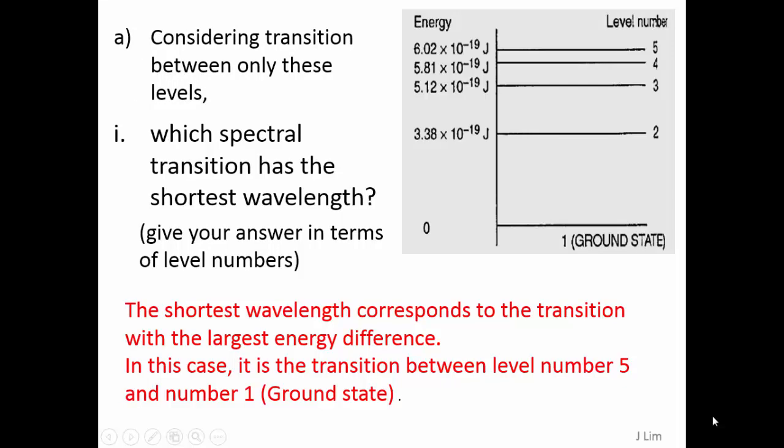The shortest wavelength corresponds to the transition with the largest energy difference. In this case, it is the transition between level number 5 and number 1.